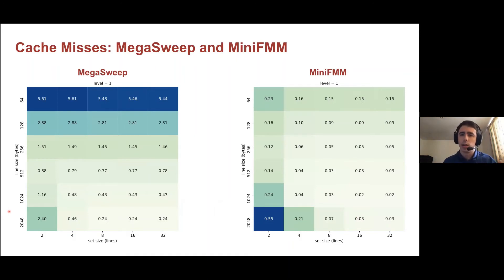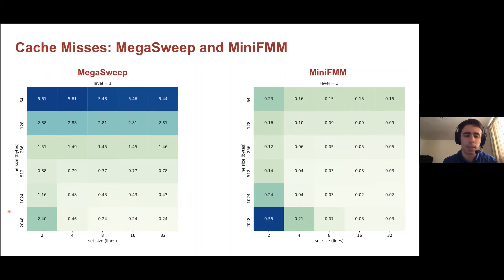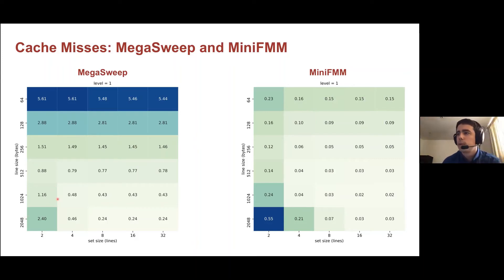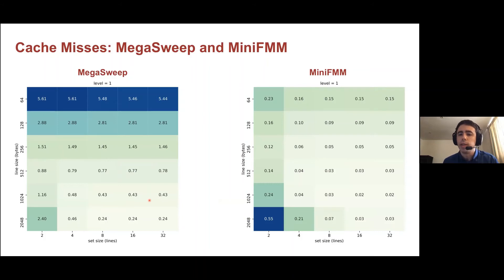We noticed that increasing associativity was more beneficial when accesses were less structured. MegaSweep and MiniFMM have much less structured memory access than Cloverleaf. For MegaSweep, higher associativity — moving further right on the graph — clearly reduces miss rates. In Cloverleaf, going to higher associativity reduced misses by about 3.5x, but for MiniFMM this was about 18x, demonstrating that the benefit of associativity scales significantly with how irregular the memory access patterns are.